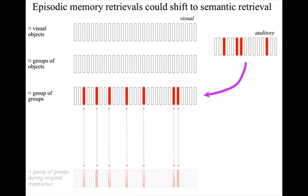In other words, the cortical area supporting the indirect activation will change from one of the hippocampal cortices — the parahippocampal cortex perhaps — to an area such as the left inferior frontal gyrus.